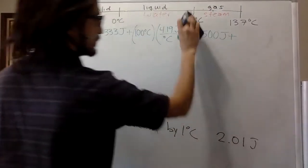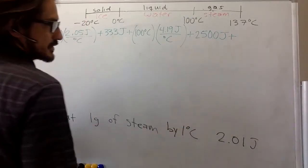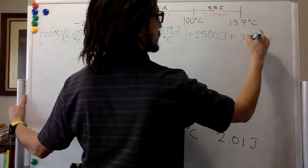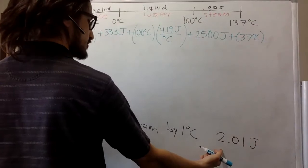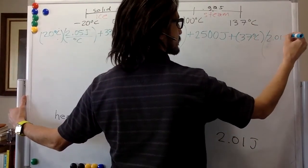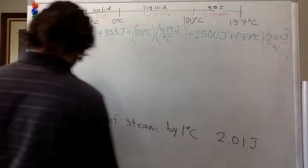And then at the end, we want to increase the temperature of the steam from 100 to 137 Celsius. So that's 137 minus 100, that's 37 degrees Celsius. And for steam is 2.01 joules per degree Celsius. Awesome.